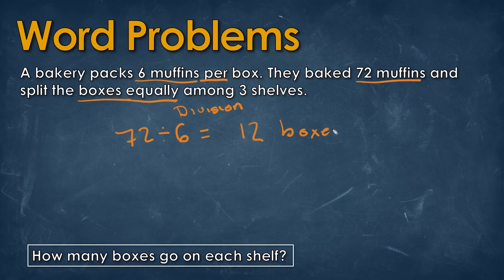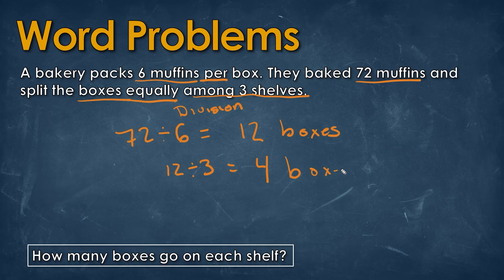Now we need to figure out how many boxes are going to be equally split among three shelves. Since we have 12 boxes in total, we divide by three for each shelf, and that gives us an answer of four. So we have four boxes per shelf, which is our answer.